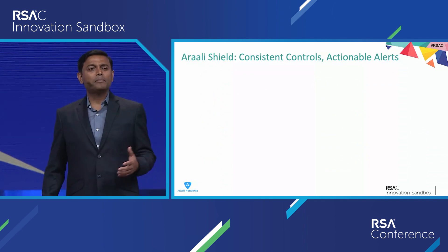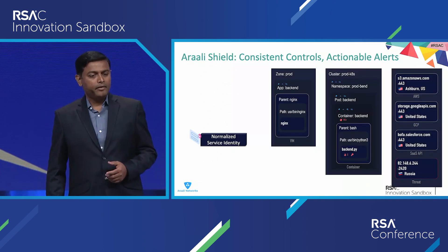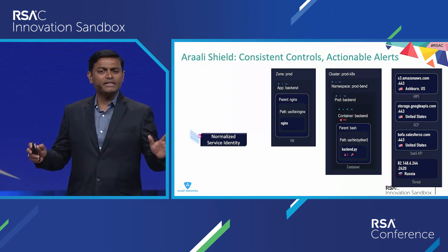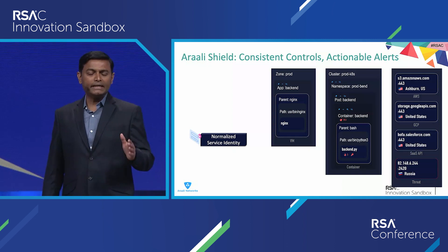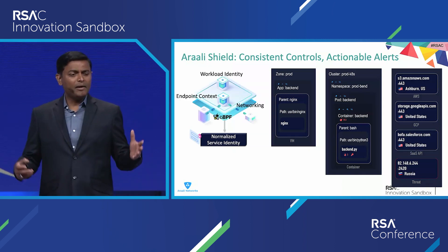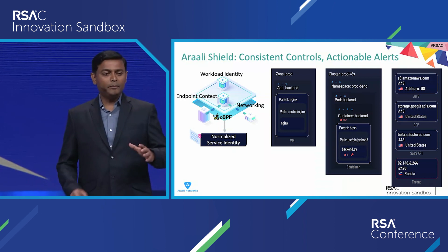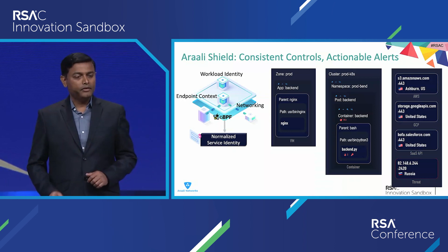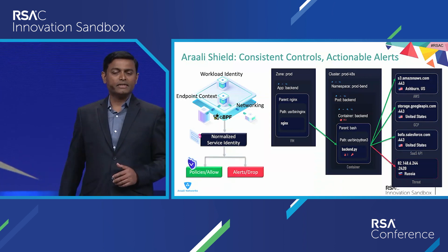Correlating logs from disparate sources and taking timely action is equally complex. That is why we took a plugin-based approach at Aralee. We create normalized identities for all services, regardless of where they are running — on virtual machines, in Kubernetes, even behind APIs. We combine endpoint context with network activity to build a graph of how these services interact with each other. You can allow good interactions and deny malicious ones.